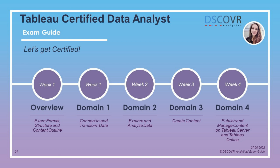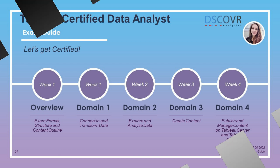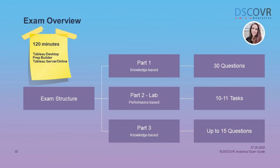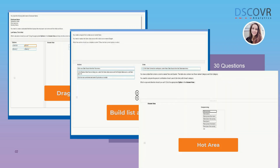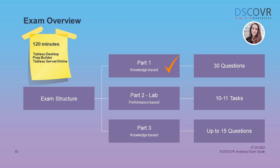Let's take a look at the exam structure. The exam consists of three sections — two knowledge-based sections and one hands-on lab. The first section is comprised of 30 knowledge-based questions, which can include multiple choice, multiple response, drag and drop, build list, and others. To see the different question types, I'd highly recommend watching the short Interactive Tutorial for Section 1, which I've linked in the description.